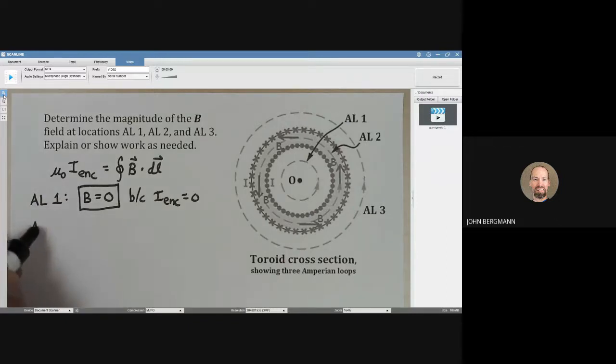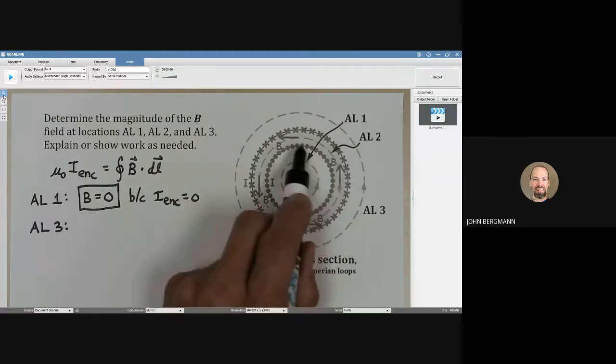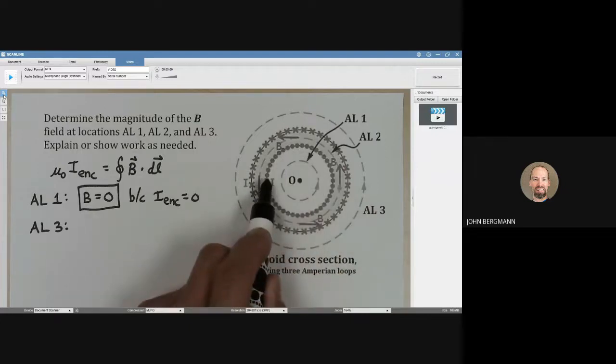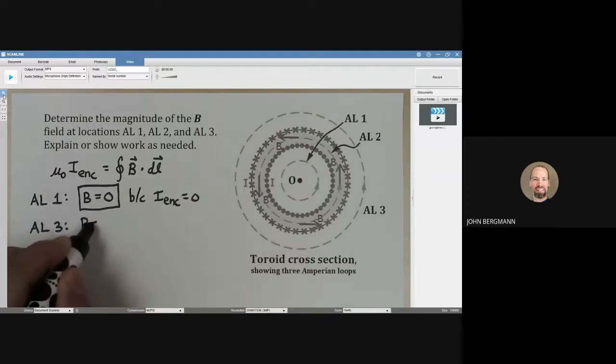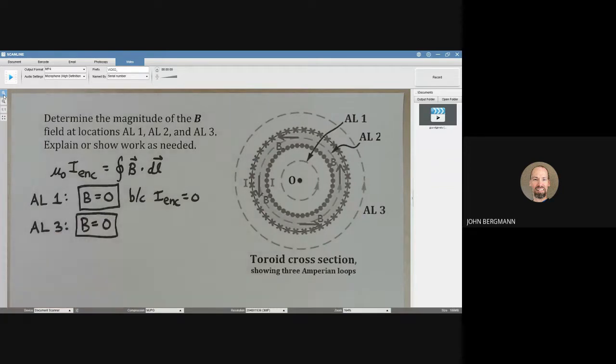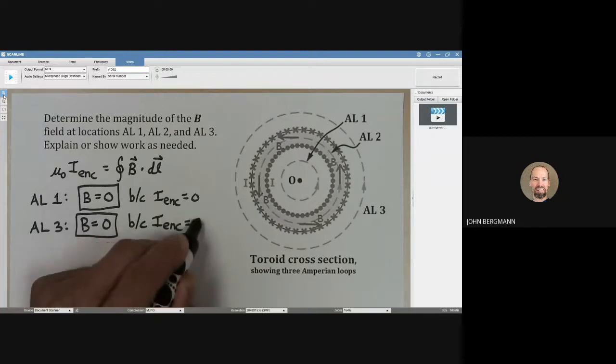Let's skip to Amperian loop number three. What about that? Well Amperian loop number three is way out here. But look what happens with Amperian loop number three. There are n windings of current, n currents you might say that are coming out of the page. But then also there are n currents that are going into the page. Same answer for Amperian loop number three. The magnetic field has to be zero because the I enclosed is equal to zero.